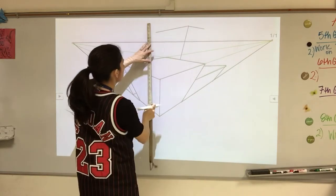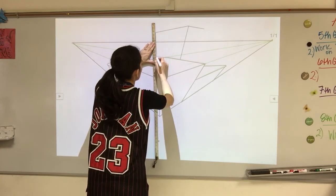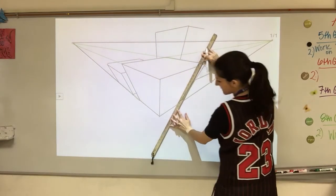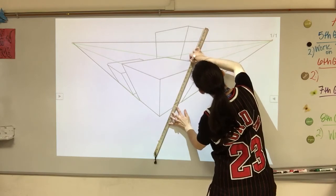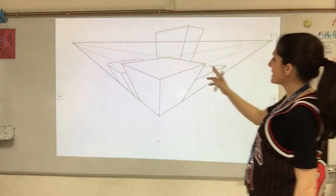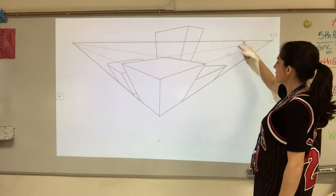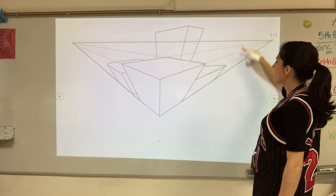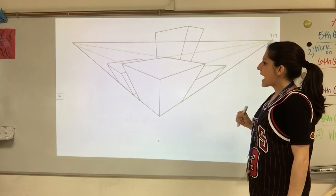Then draw two lines down to vanishing point three — remember, there are no verticals, only lines going to vanishing point three. If a building happens to overlap another one, you'd take the bottom over to the left vanishing point and draw both visible sides of that building. You just see more of it.